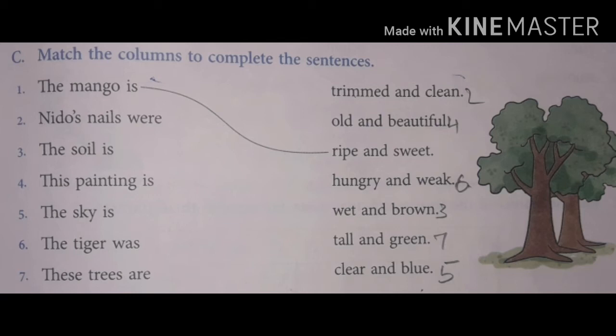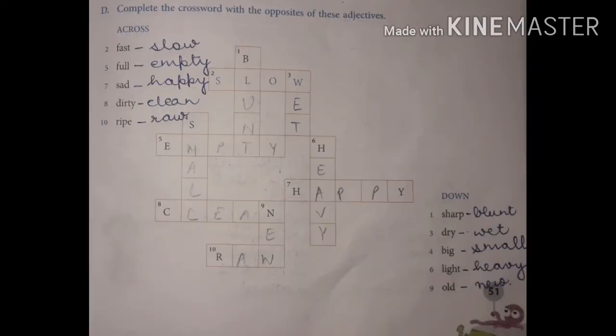Complete the crossword with the opposites of these adjectives. Across: second one, fast - opposite of fast is slow. Fifth one, opposite of full is empty. Opposite of sad is happy. Opposite of dirty is clean, and opposite of ripe is raw.